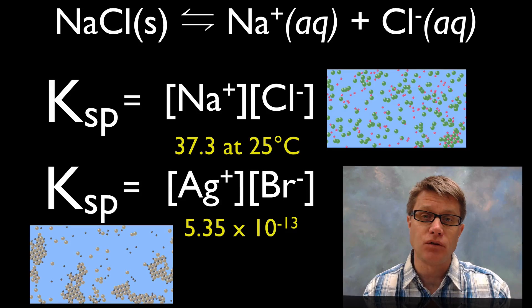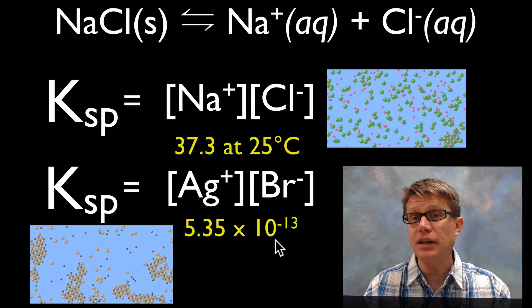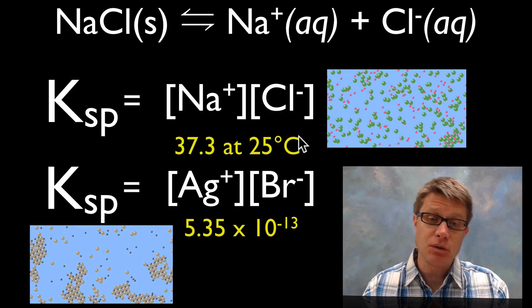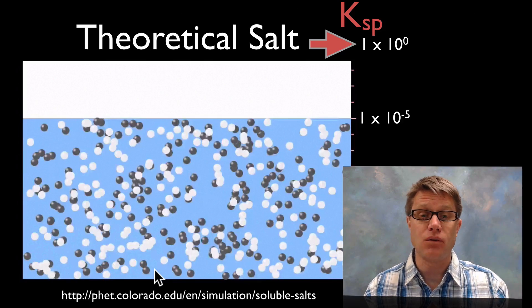If we compare that to the silver bromide, what's our Ksp value here? It's going to be much less than 1. What does that mean? Our equation is going to be shifted way towards the left. And so we're going to have more of that solid form.